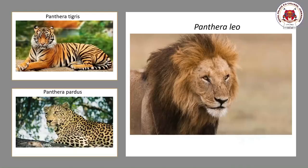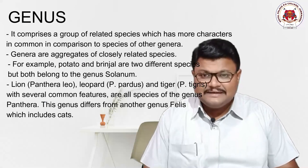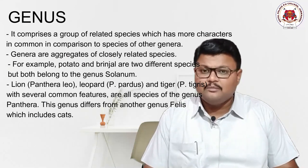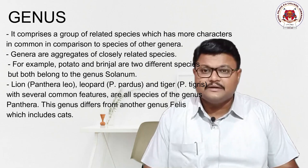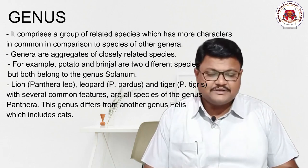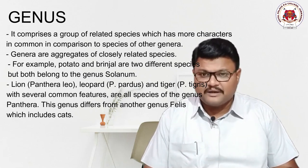Another example from animals: the genus Panthera. Lion's biological name is Panthera leo, leopard's is Panthera pardus, and tiger's is Panthera tigris. These three organisms have different specific epithets but share a common genus name — Panthera. This clearly indicates that a genus may contain one or more than one species. That is why genus is called a group of related species.